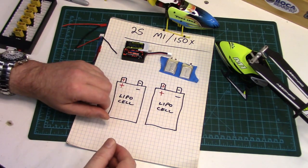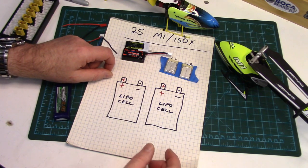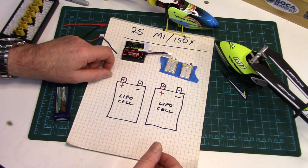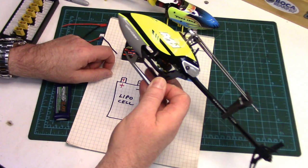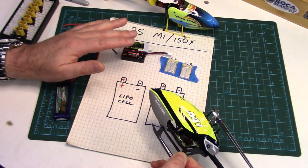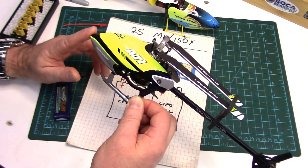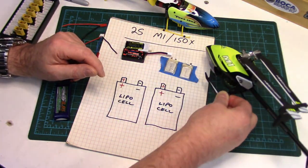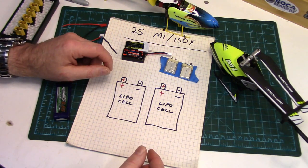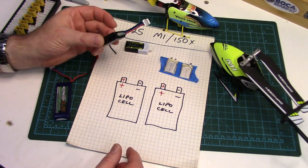Howdy folks, John here from rchelicopterfun.com. Just doing a quick little soldering project tonight to cover a topic that's coming up ever since I did the M1 heli review, and that is regarding building a charge harness for it. Now I know these guys are coming with a little basic charge harness now, so that's good, but still getting questions on it and specifically parallel charging harnesses for the little 2S packs.